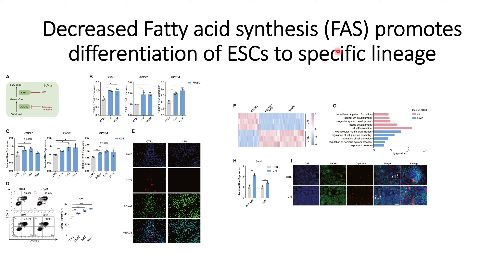We will continue our discussion about the effect of fatty acid synthesis on the differentiation of embryonic stem cells to a specific lineage. In this figure, we will discuss pancreatic cancer cell lineage from embryonic stem cells. In the previous video, we understood the comparison between fatty acid synthesis and fatty acid oxidation, and we made a hypothesis that fatty acid oxidation promotes differentiation of embryonic stem cells, whereas fatty acid synthesis reduces differentiation towards the germ layer.